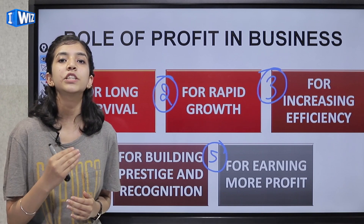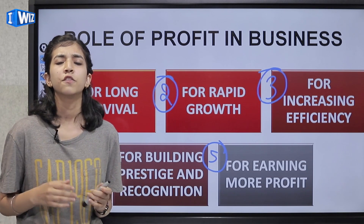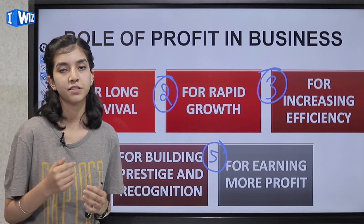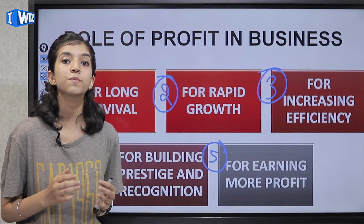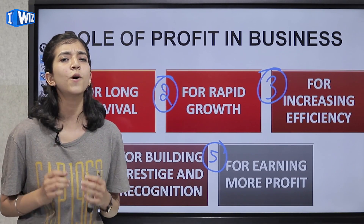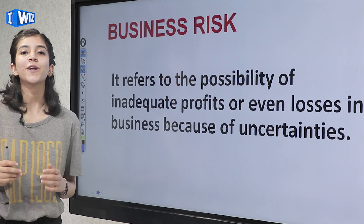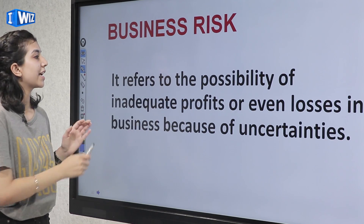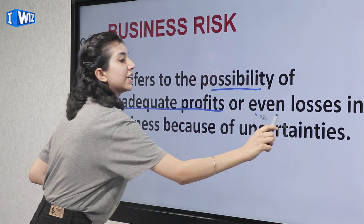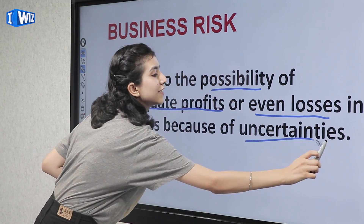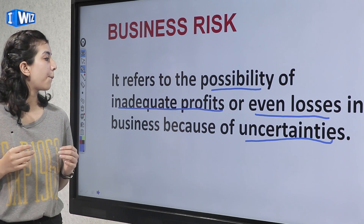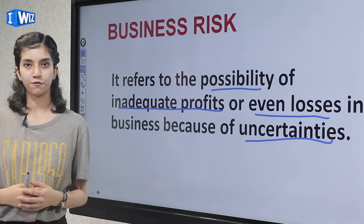Catalyst means the increasing factor. For example, if I earn profits, I can further invest in the business, and they will give me more returns — in short, my profit will increase. Now, what is business risk? It refers to the possibility of inadequate profits or even losses in the business because of uncertainties. A business risk can arise from a business not earning regular profits, and uncertainties refers to those unforeseen events that can damage the business.